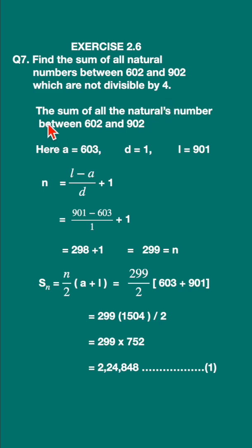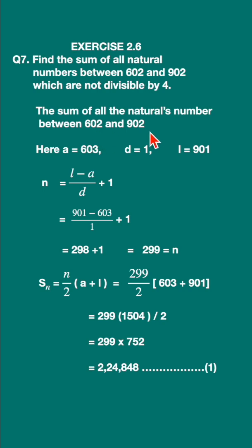First, let us find the sum of all natural numbers between 602 and 902. The first term will be 603, because we are not including these two endpoints. First term is 603, common difference is 1 because we are including every number. The last number will be 901.